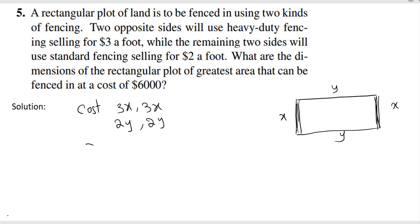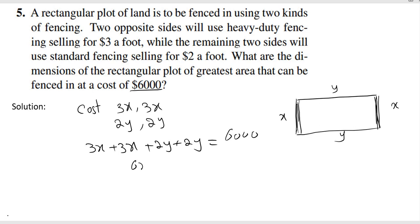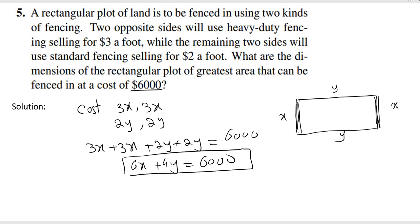The total cost is 3x plus 3x plus 2y plus 2y, and the problem states the total should be 6,000. So we get the constraint equation: 6x plus 4y equals 6,000.